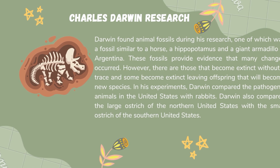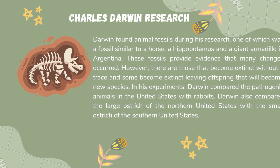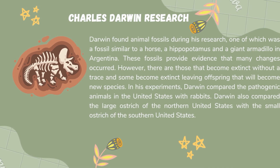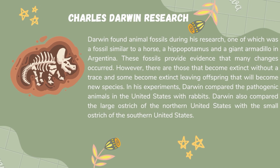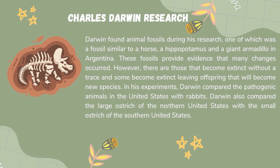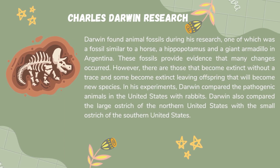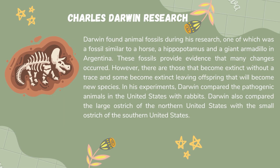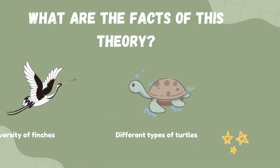In this experiment, Darwin compared the animals in the United States with rabbits. Darwin also compared the large horse breeds of the Northern United States with the small horse breeds of the Southern United States.